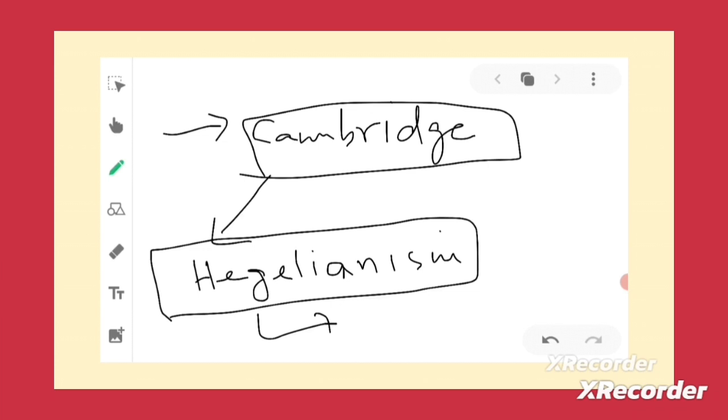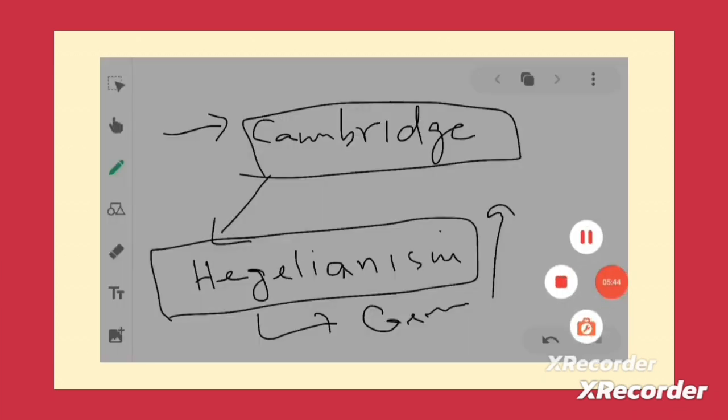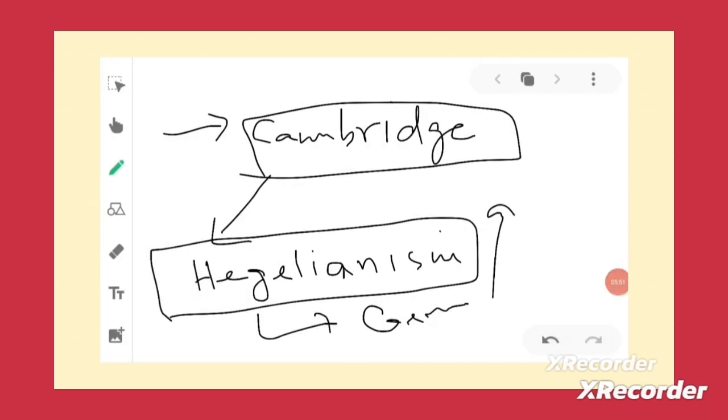And then Iqbal went to Germany. Although he wrote his dissertation on the development of metaphysics in Persia, his knowledge of German philosophy and German culture cannot be underestimated. So it is not surprising that he knows Hegel for this very reason. Some of his teachers were, at Cambridge at least, Hegelians.